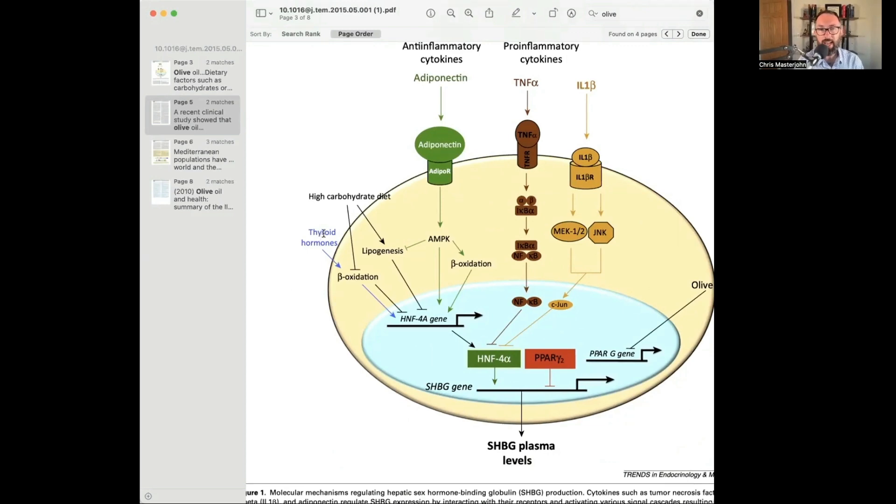It also has thyroid hormone increasing beta-oxidation doing the same. So more thyroid hormone, more SHBG. However, they have a high-carbohydrate diet suppresses beta-oxidation and increases lipogenesis, which leads to fed state physiology, which suppresses SHBG.